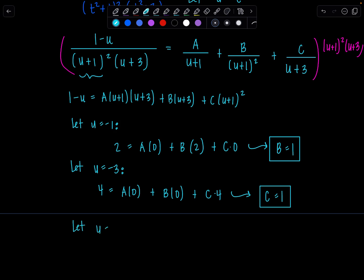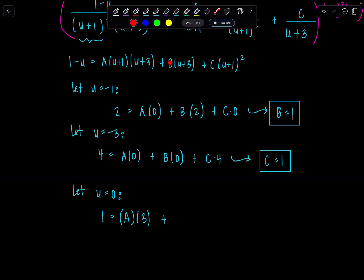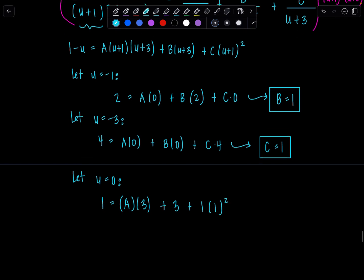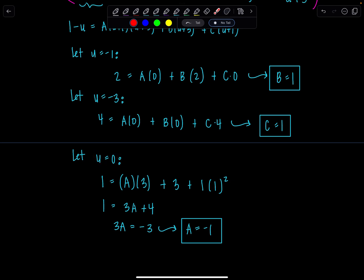Let's let u equal 0. On the left, 1 minus 0 is 1. I'm solving for a, so with u equal 0, I have a times 1 times 3, plus b times 3 — b is 1 — plus c times 1 squared — c is 1. So 1 equals 3a plus 4, meaning 3a equals negative 3, so a equals negative 1. You could have chosen any value — since we already knew b and c, just pick anything convenient.